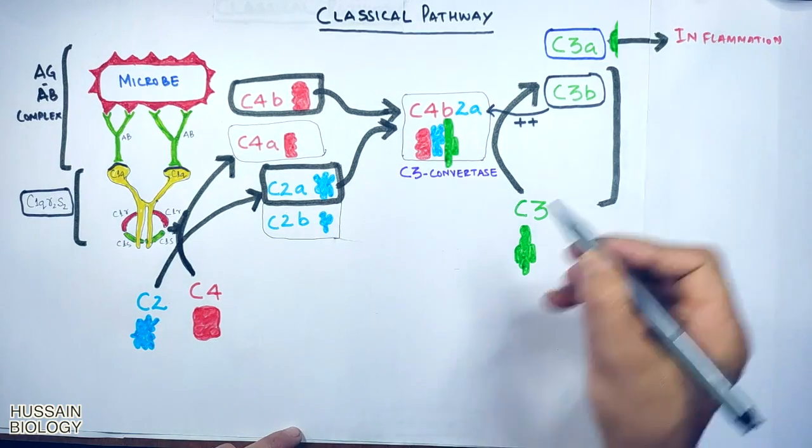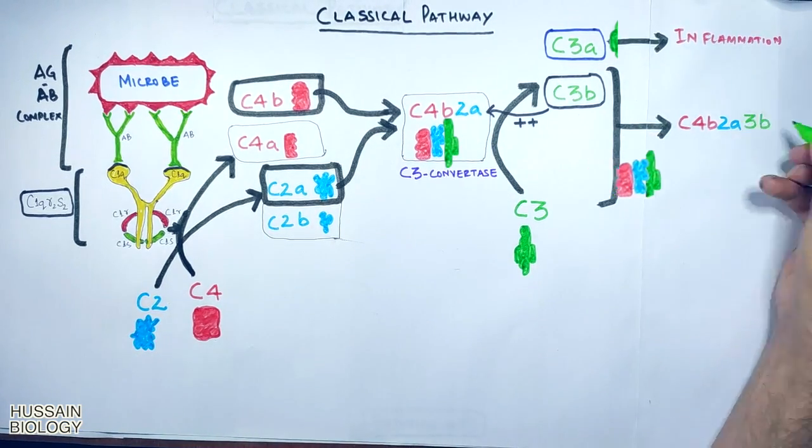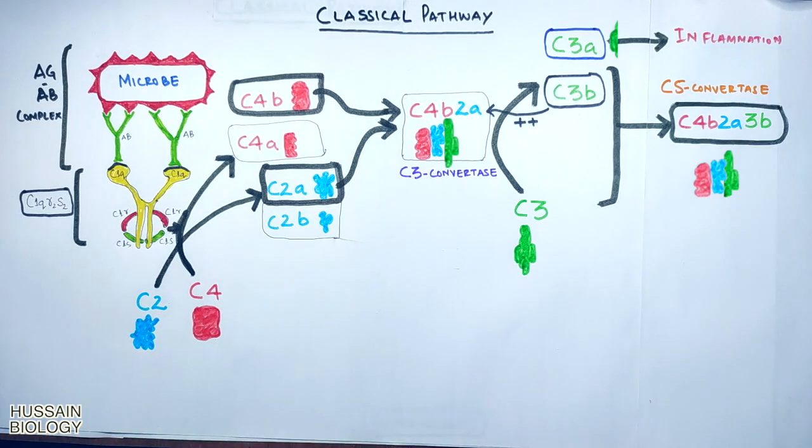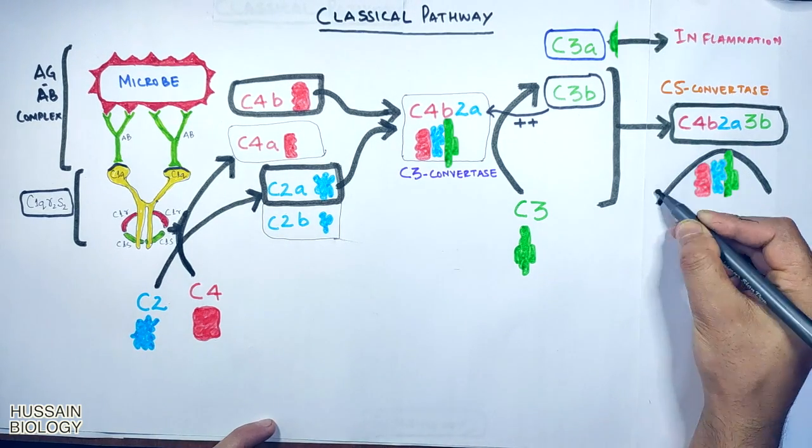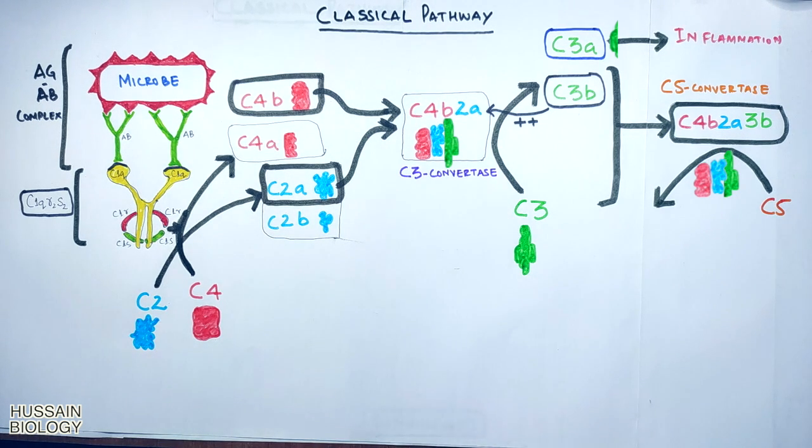C3a helps in inflammation whereas C3b combines with the C3 convertase. We end up with the new enzyme with the combination C4b2a3b which is known as C5 convertase. In the next step, C5 convertase acts upon C5 and converts it into C5a and C5b.